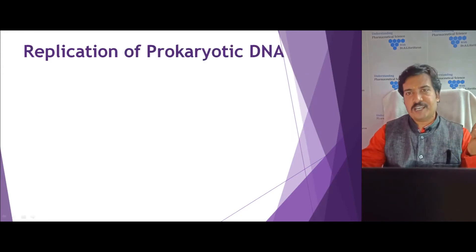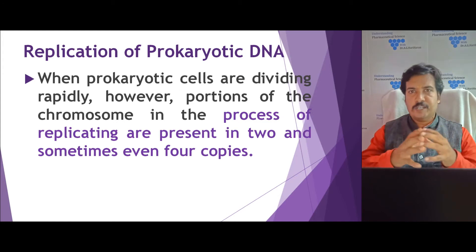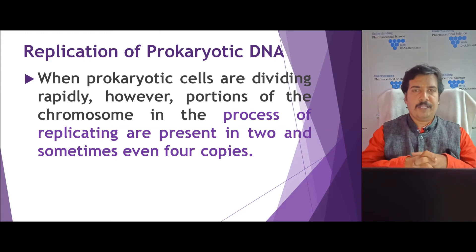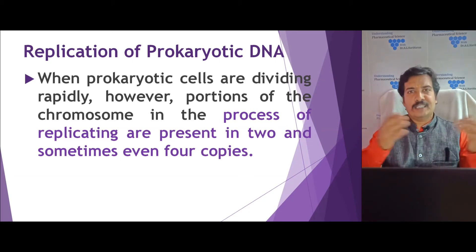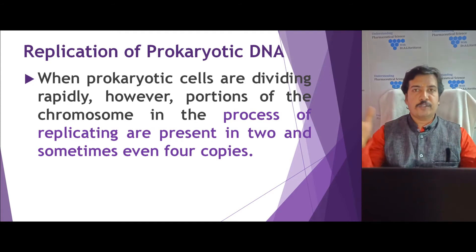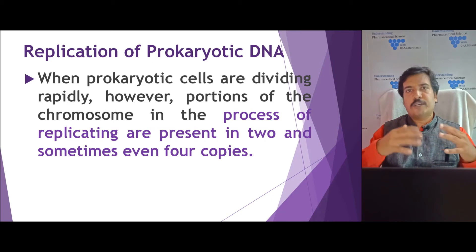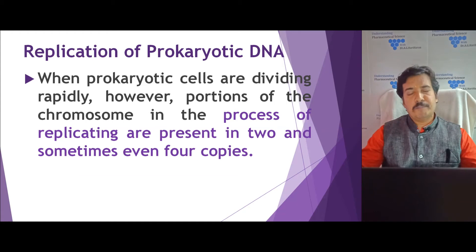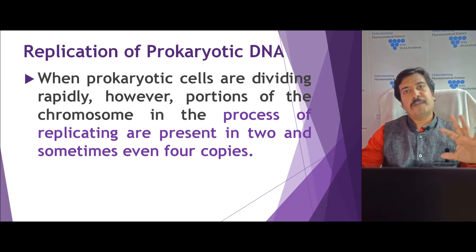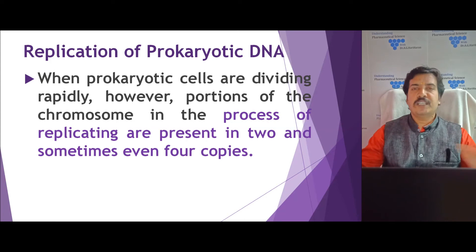How does replication occur in prokaryotic DNA? The prokaryotic cell divides very rapidly. For example, E. coli has a doubling time — a single cell divides into 2 cells — within a span of 15 minutes, whereas a human eukaryotic cell requires 24 hours for cell division. Since prokaryotic cells divide at such a rapid rate, DNA replication also happens at a very fast rate. Moreover, prokaryotes do not contain any intron sequences in their genetic makeup, and while replication is occurring they can simultaneously perform transcription and translation — which is not possible in eukaryotes. That is a major difference between prokaryotes and eukaryotes.